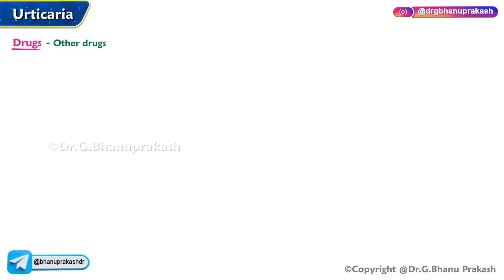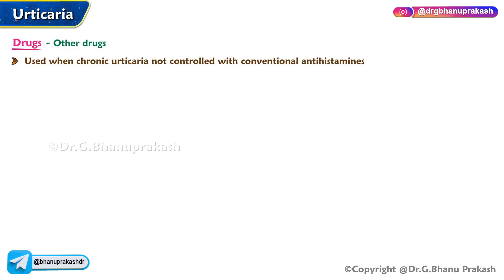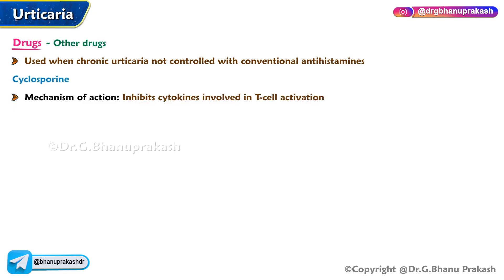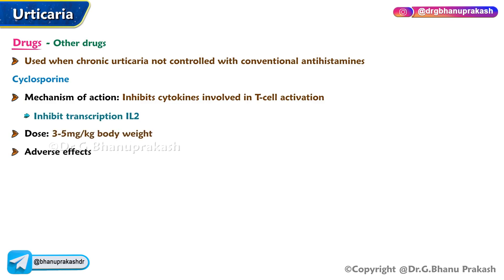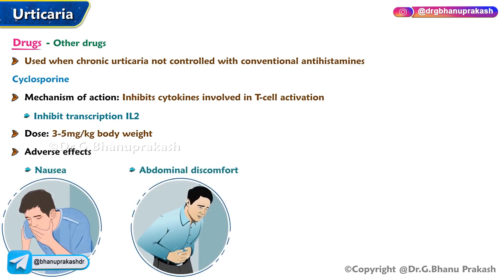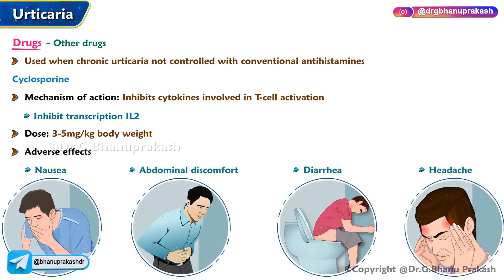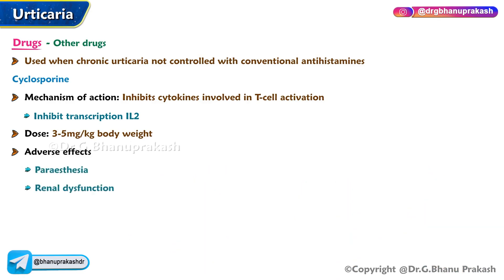Other drugs used when chronic urticaria is not controlled with conventional antihistamines: cyclosporine inhibits cytokines involved in T-cell activation and also inhibits the transcription of interleukin-2. Dose: 3 to 5 milligrams per kilogram body weight. Adverse effects include nausea, abdominal discomfort, diarrhea, headache, paresthesia, renal dysfunction, hypertension, and electrolyte imbalance.